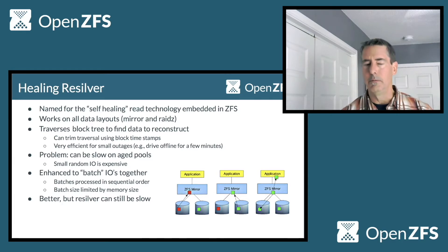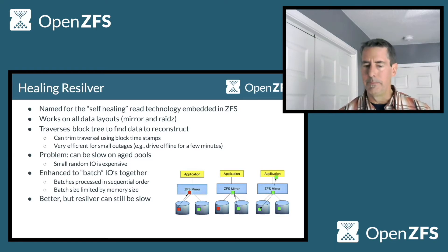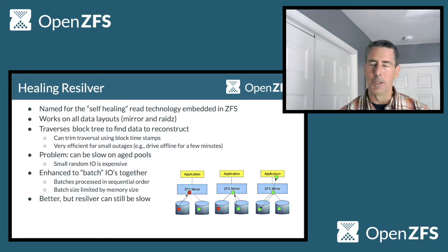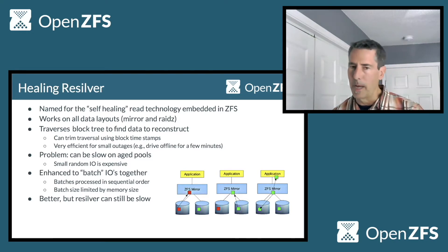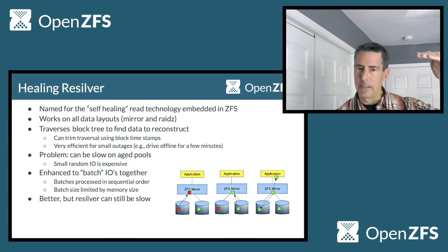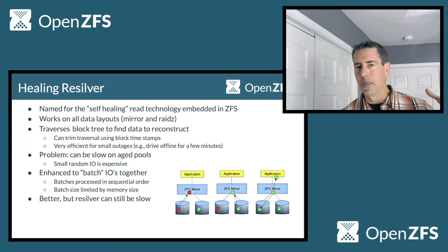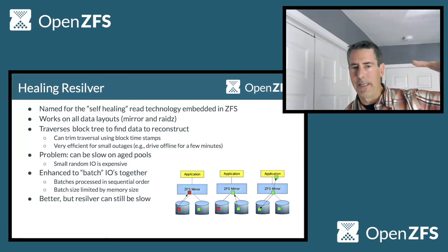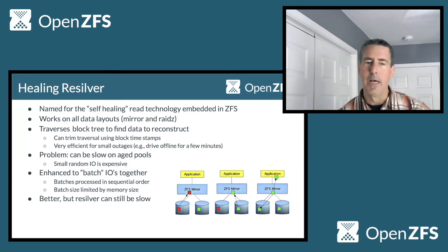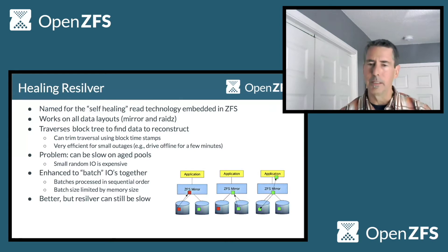There was an enhancement to the traditional healing resilver — it batches many IOs together by reading a bunch of block pointers, sorting them into a sequential list, and then traversing them. This gives some sequentialness at the scale of that pre-read window. But since it's limited by how much memory it can read ahead into, it can't do the entire drive that way — it does chunks, so you get some sequentialness but it's still not optimal.